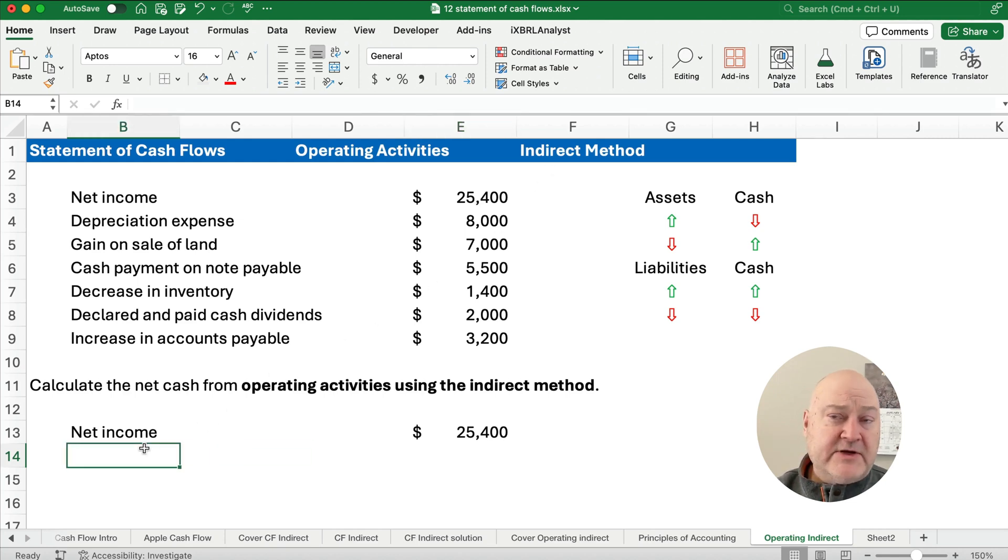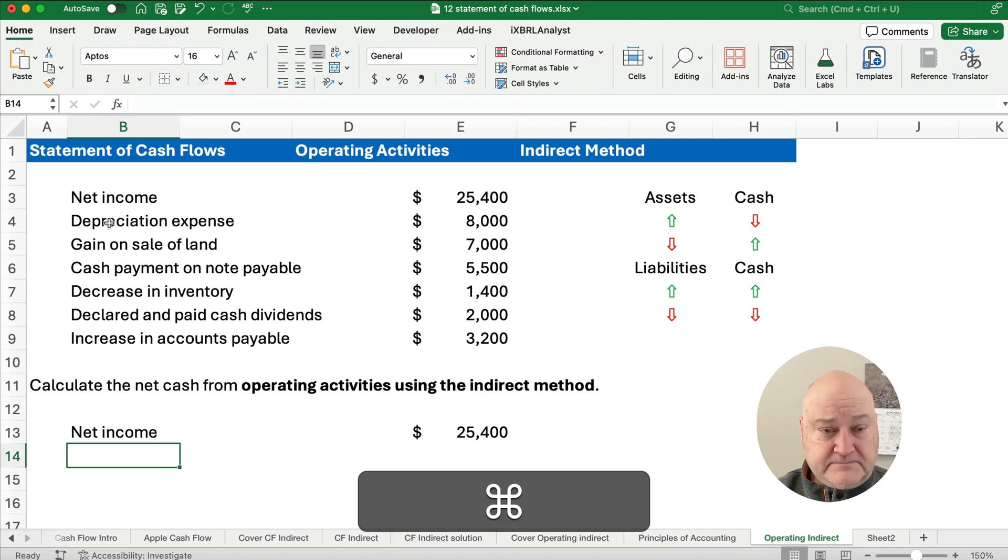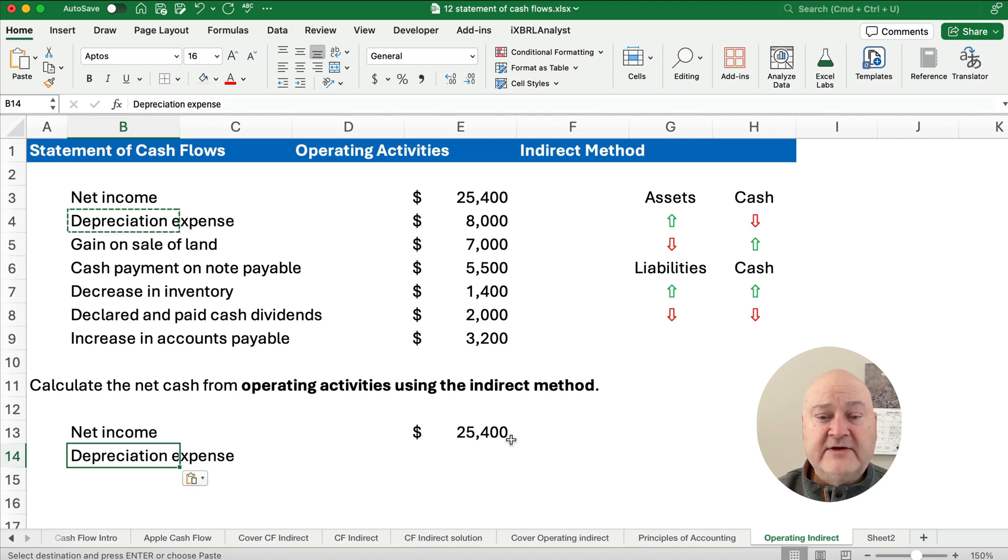Now the first thing we typically do is we're going to add depreciation expense. Let's think about this. Depreciation expense is included in net income. This number, $25,400, includes a decrease based on depreciation expense. There's a minus on the income statement we would see. We subtracted out depreciation expense.